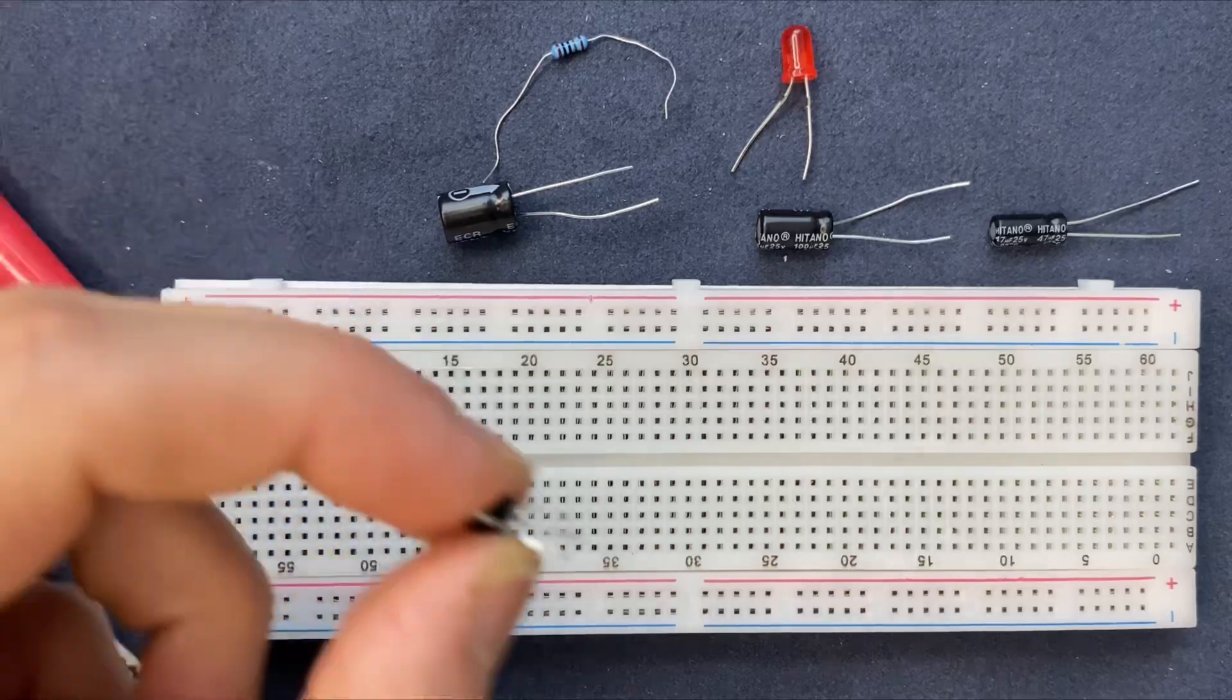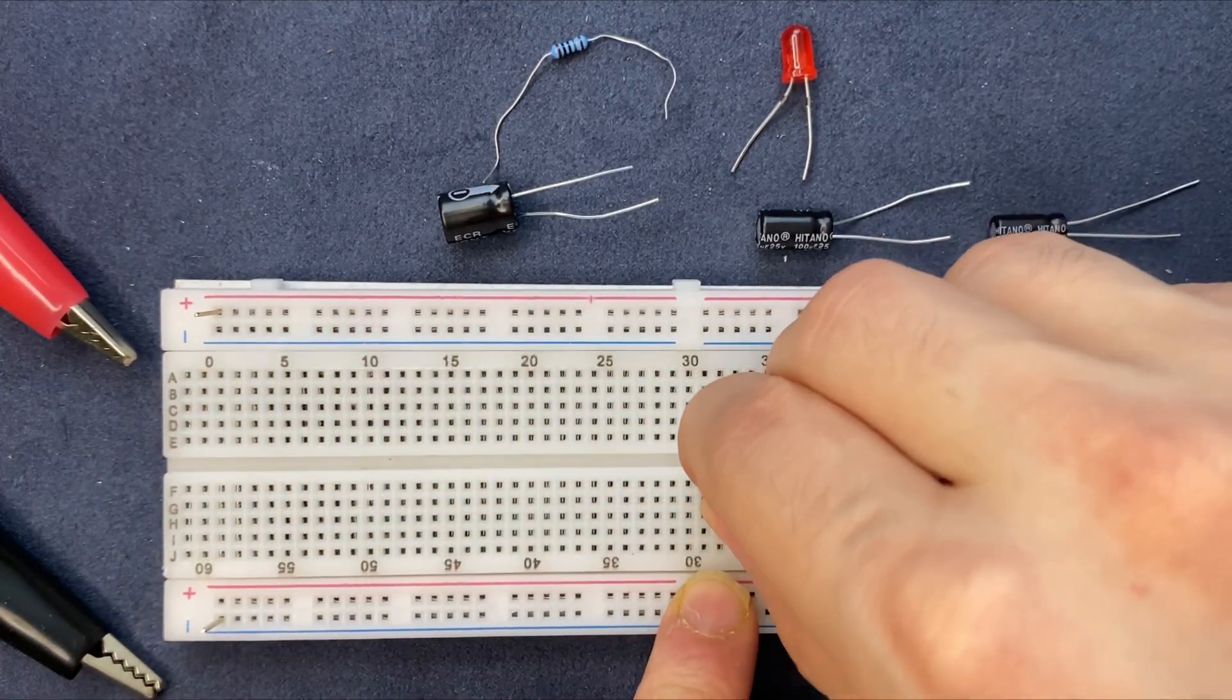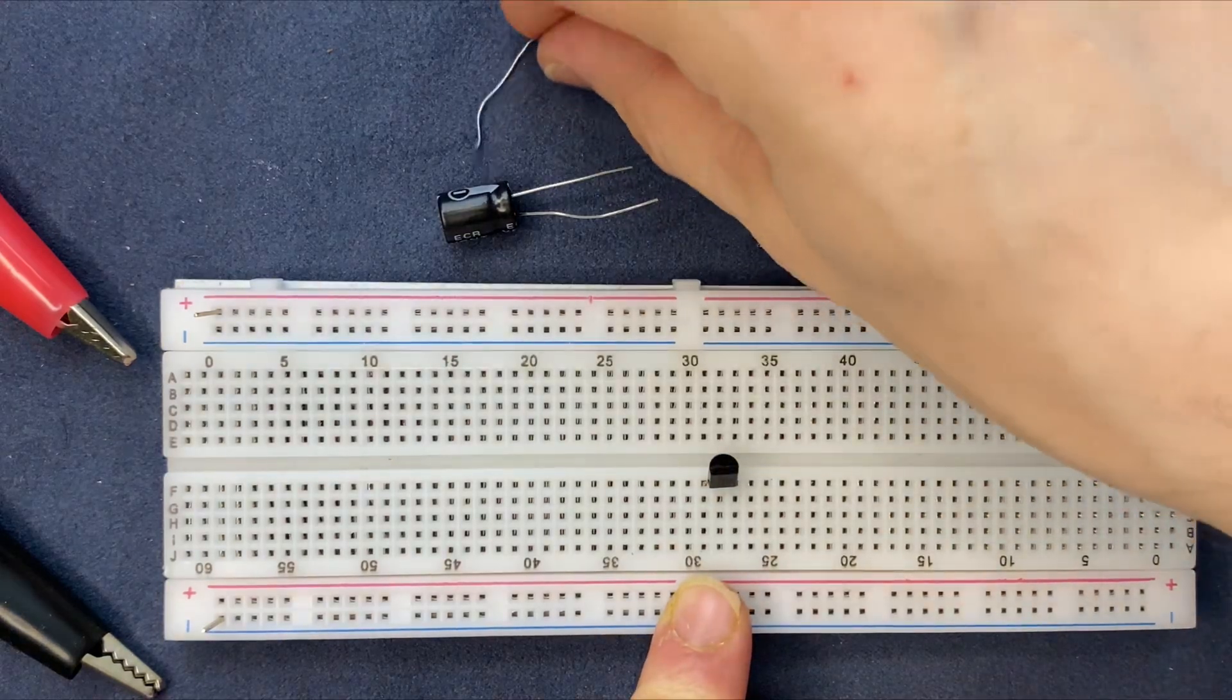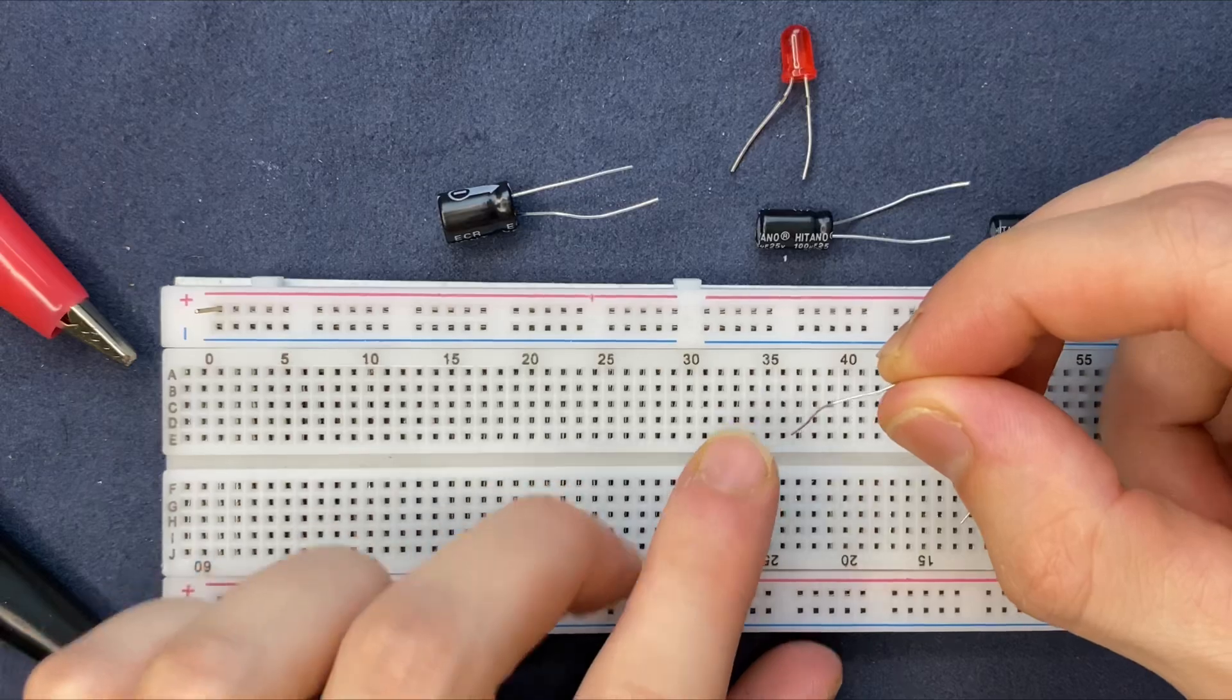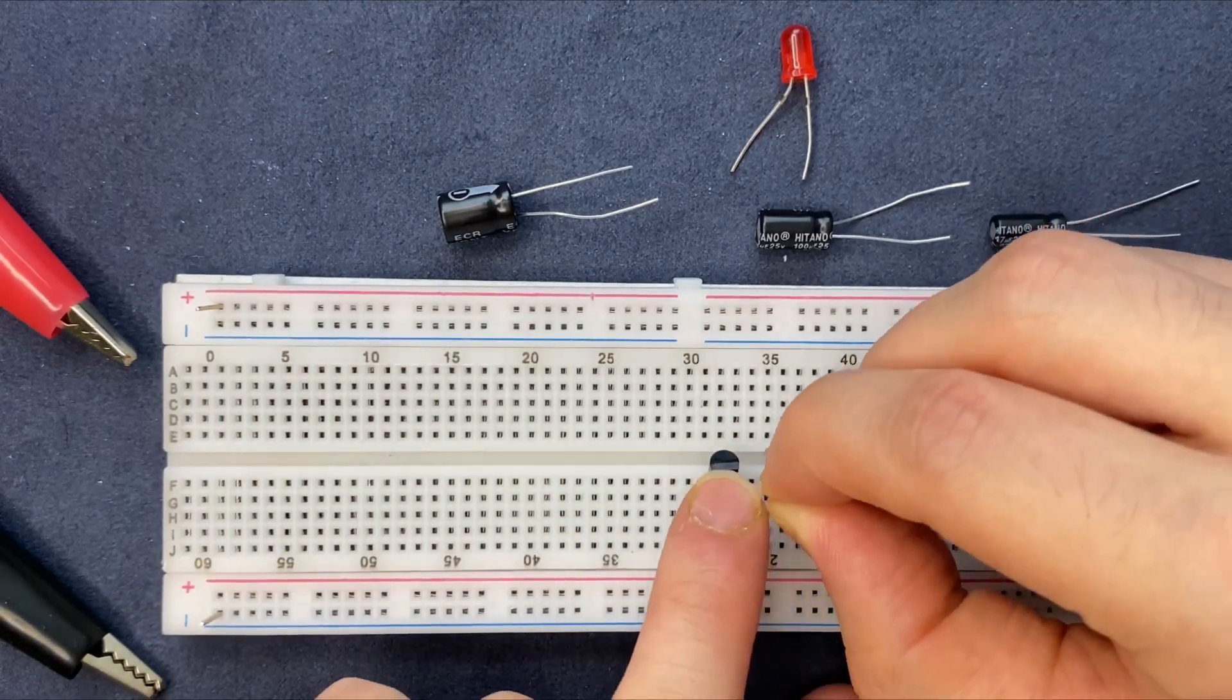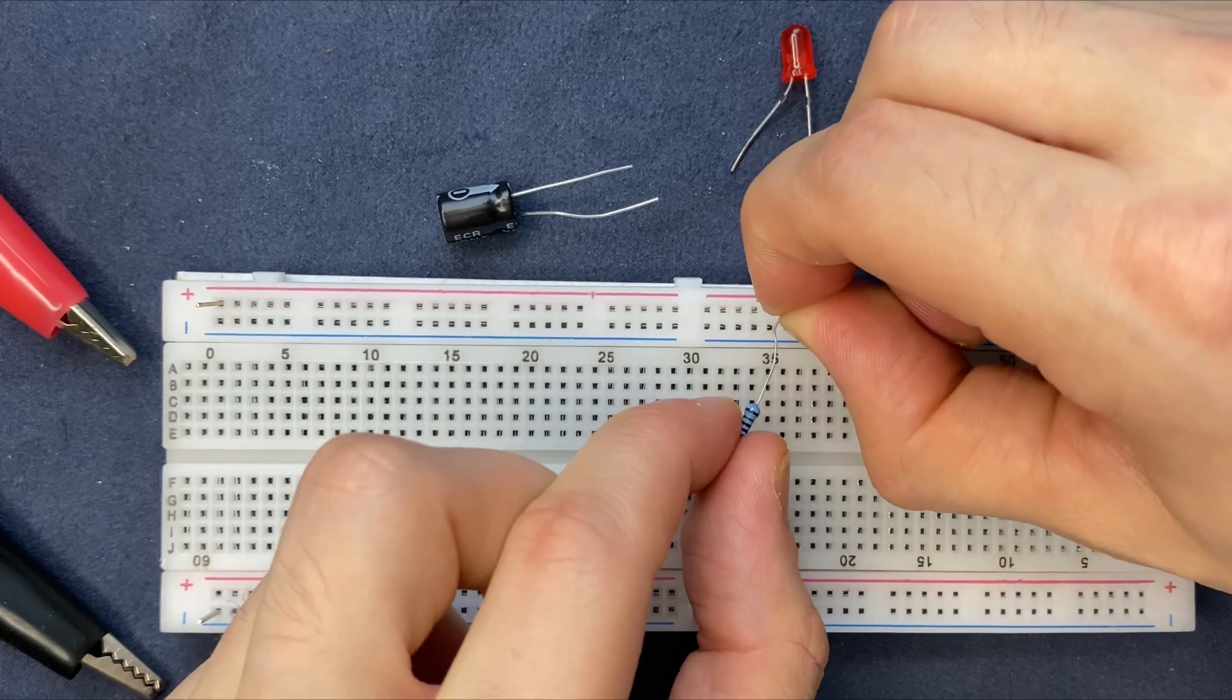Here is my transistor, BC547. I will connect it to the breadboard. One kilo ohm resistor, one of the leads goes to the emitter of the transistor and the other one to the positive rail of the breadboard.